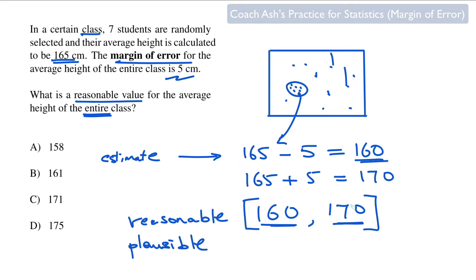All you've got to do is find a number that's inside this range. So 158 is clearly out. 161 is definitely in. 171 and 175 are out. And that's why 161 is our correct answer.